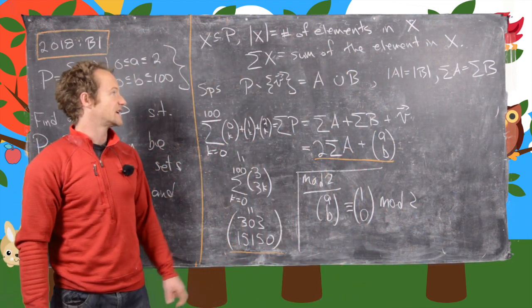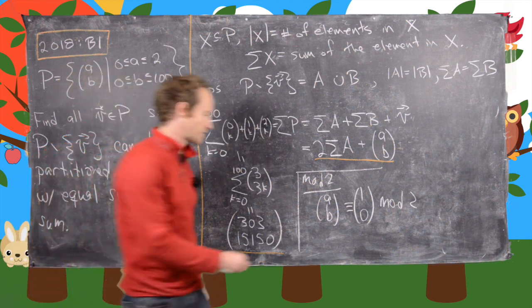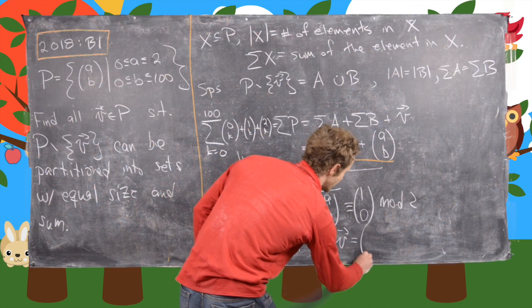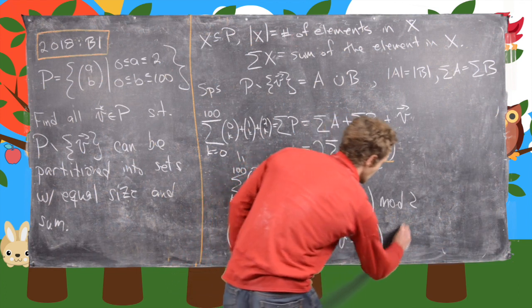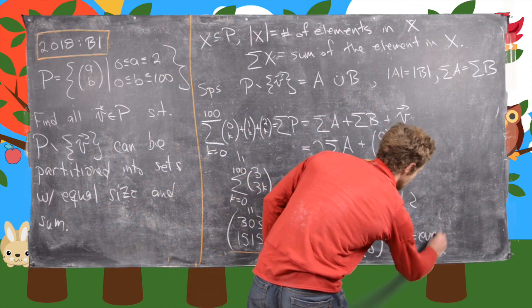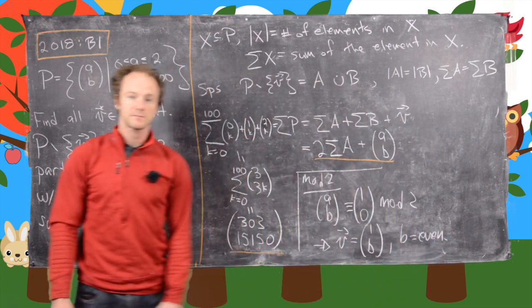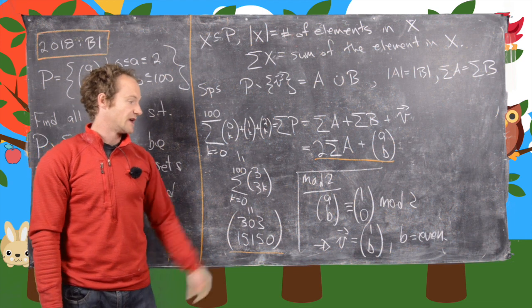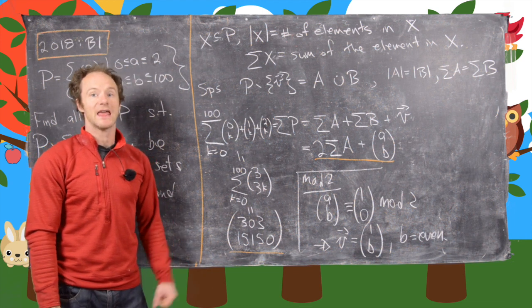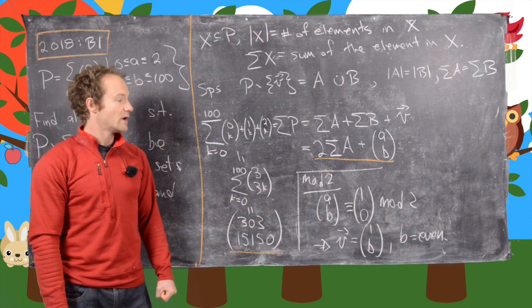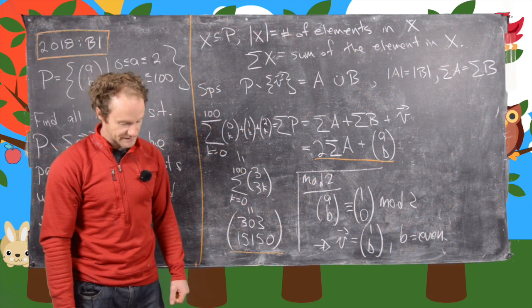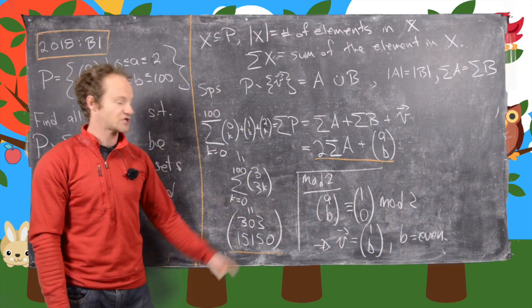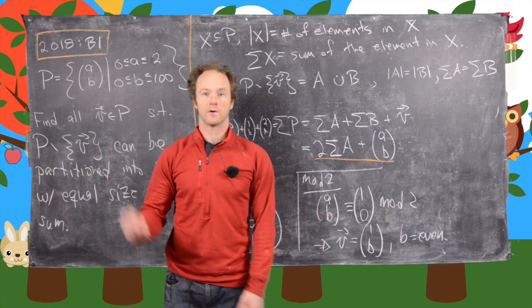What that tells us is that if we're able to partition this in the first place, then V has to be of the form (1,B) where B is even. Now we don't know if it's possible to actually do this partition given this kind of vector, but if we do have a partition, the vector has to be of this form.